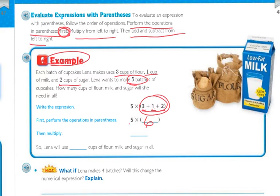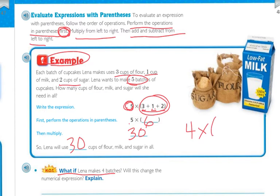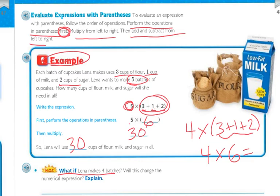Now multiply: five times six is thirty. So Lina will use thirty cups of flour, milk, and sugar in all. If Lina makes four batches instead, we change the five to a four: four times parentheses three plus one plus two. Three plus one is four, plus two is six. Four times six is twenty-four cups.